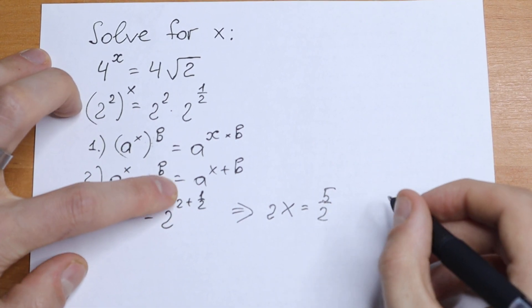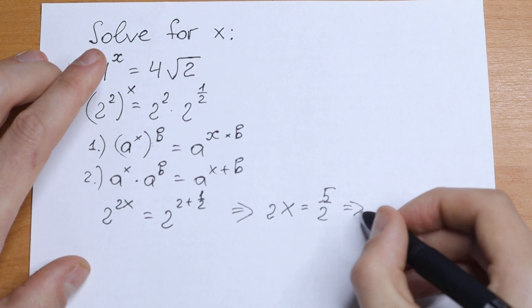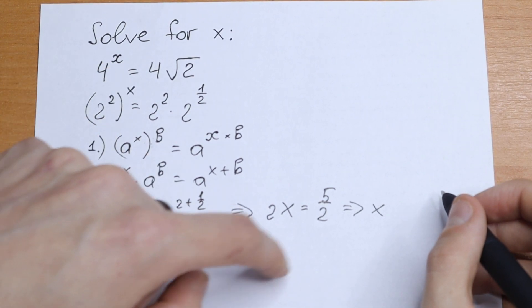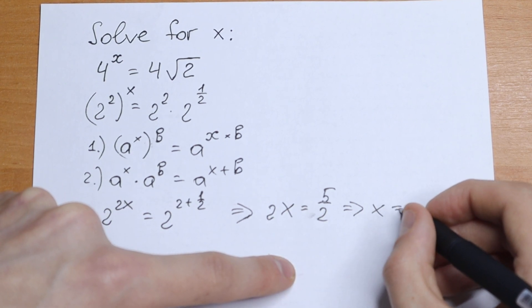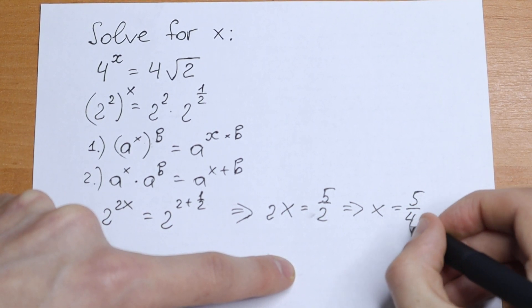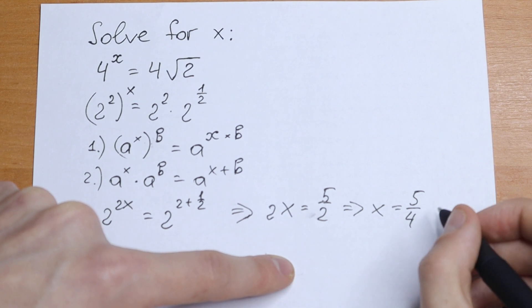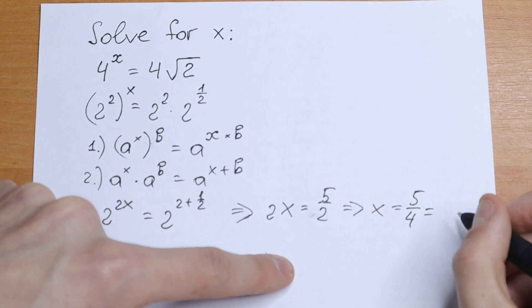I add all of this and as a result we will have x equal to - dividing both sides by 2 - we will have not 5 half but 5 divided by 4. And if we are talking about another way to represent this, we can write it as 1.25.